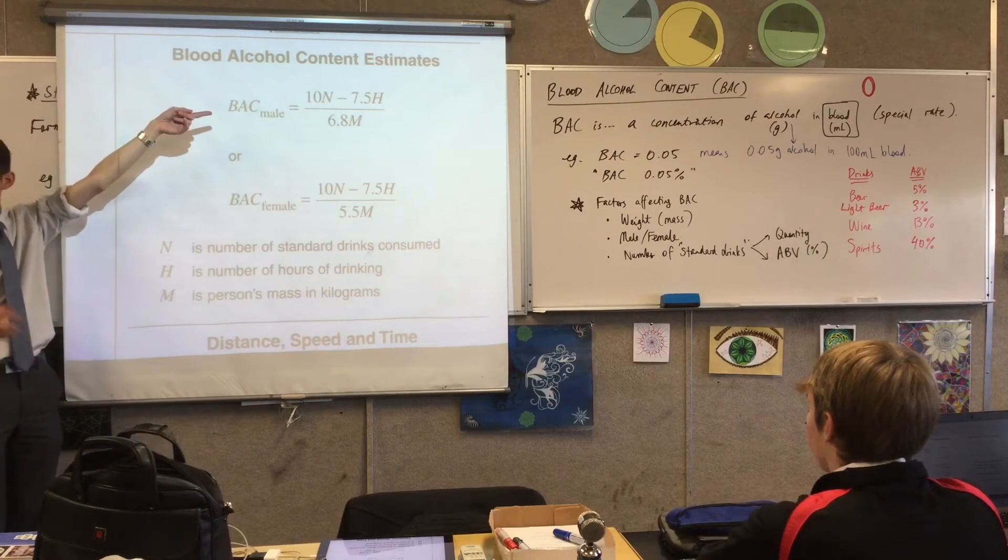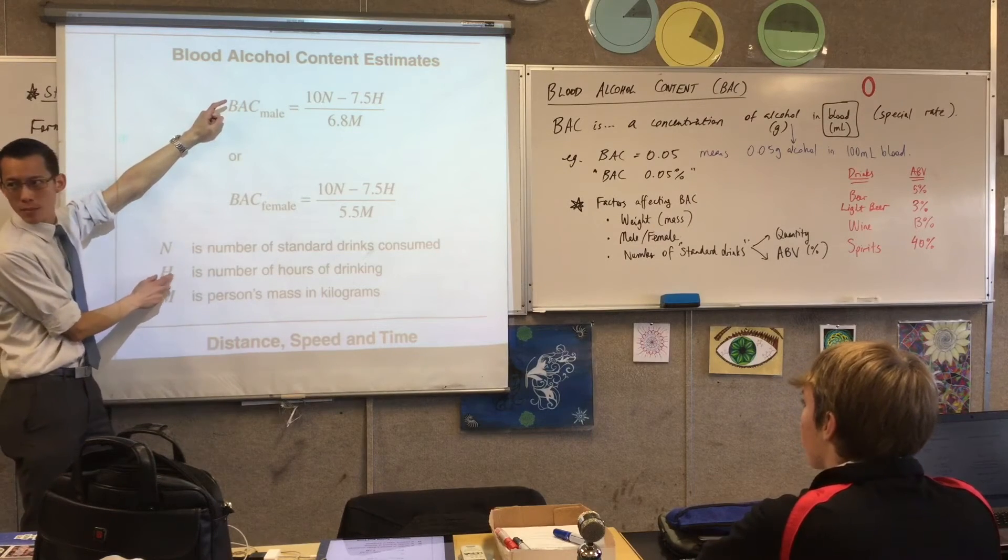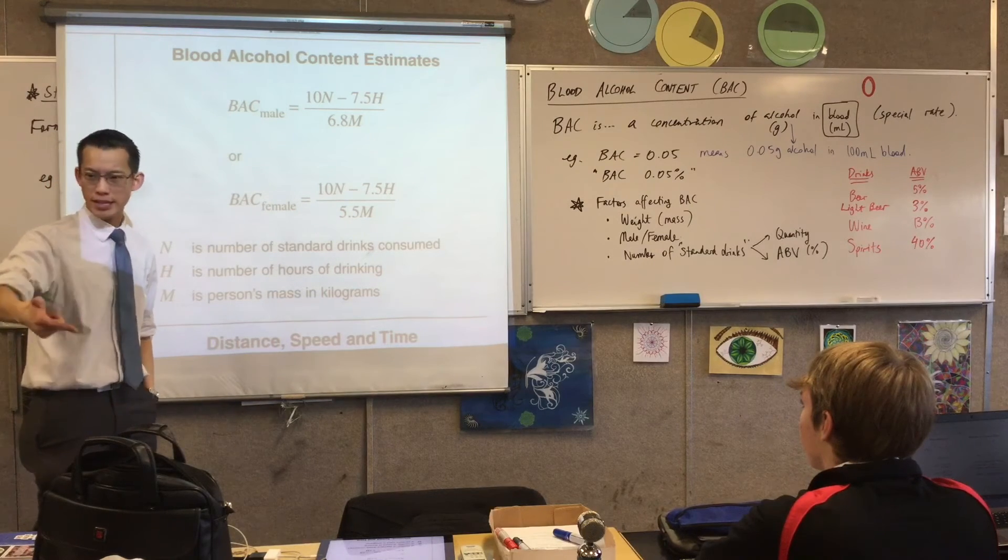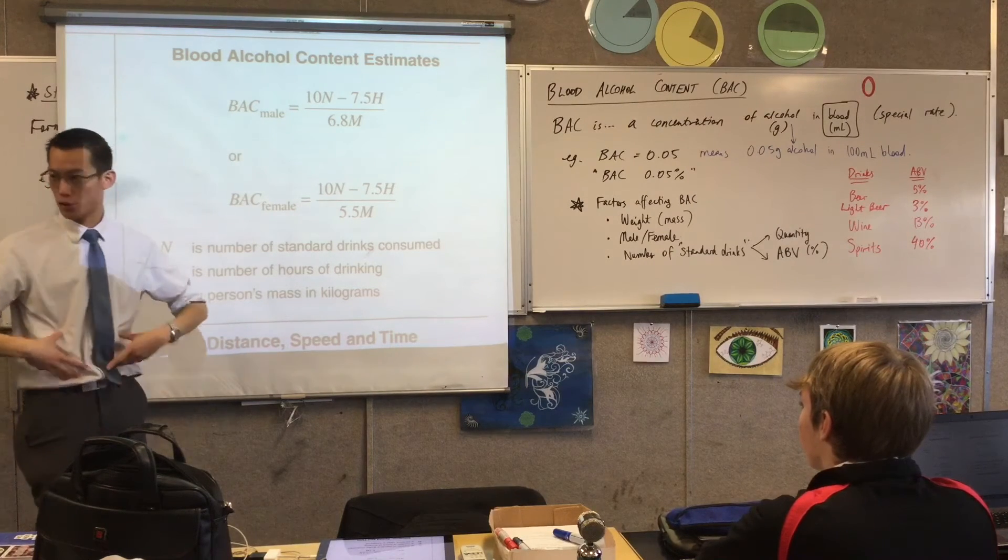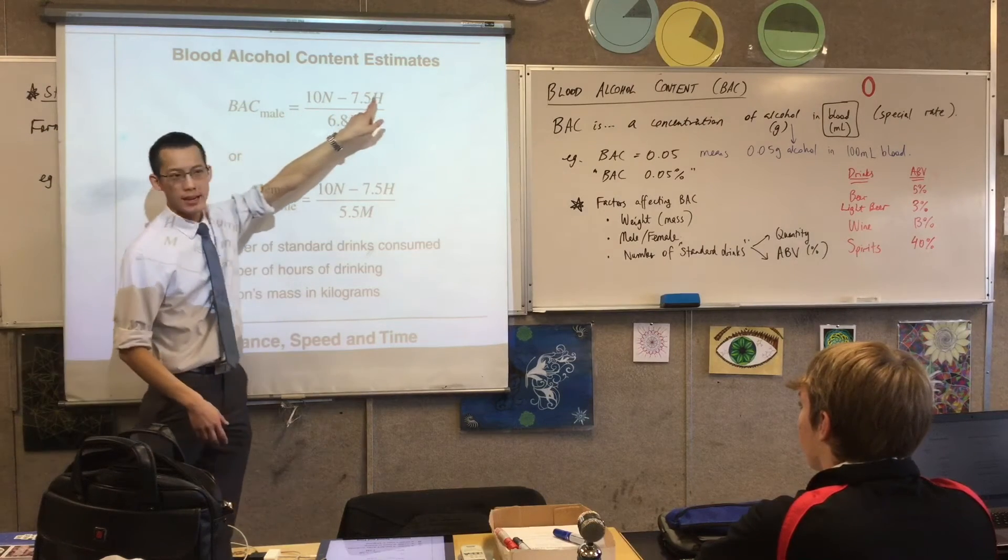Now then you can see there's three numbers here, three numbers. They are defined for you, okay? So N we've already worked out, that's the number of standard drinks you've had. H stands for hours. Why does this matter? The longer you've been drinking, the longer your body has had the opportunity to go ahead and process that alcohol, right?